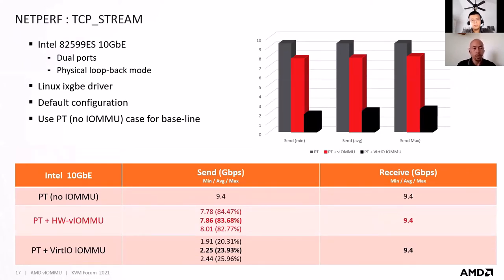For the next benchmark, we are using Netperf running TCP Stream. The device is the Intel 10G Ethernet in dual-port configuration with physical loopback mode. One port is used by the host running Netperf, and the other port is used by the guest running NetServer. Both guest and host use the Linux IXGBE driver in default configuration with no fine-tuning. The baseline — virtualization with pass-through NIC and no IOMMU — is quite close to line rate at 9.4 gigabits per second.